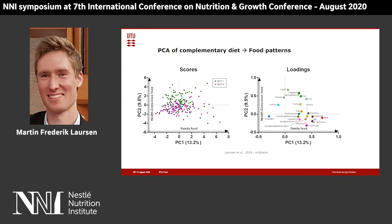Comparing the two sub-cohorts on the left graph, we can see that the purple group — children of obese mothers — has a less healthy composition of their diet. However, on the family food parameter axis, we don't see a difference on average in how far along they are in their complementary feeding.